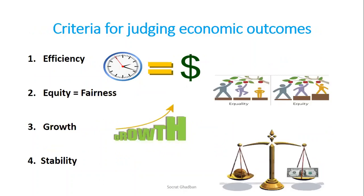Finally, in order to judge a policy, we can evaluate it based on four criteria. The first is efficiency — whether the policy is producing what people want. The second is equity or fairness — whether all people in the economy can access resources. Third is growth — whether the policy ensures an increase in output. Fourth and finally is stability — whether the economy is growing in a steady way with low inflation and full employment.